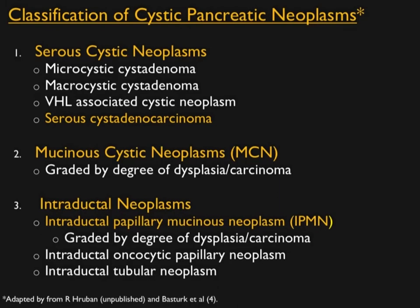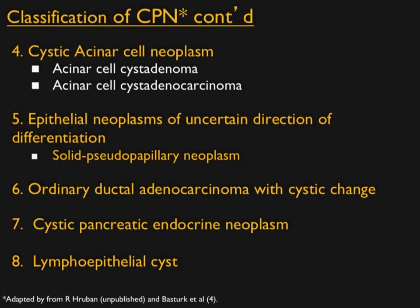Looking at the classification of cystic pancreatic neoplasms: under serous cystic, serous cyst adenomas are the ones we think about most. We'll talk about mucinous cystic neoplasms, IPMNs — probably the most common thing we will be seeing — and unusual tumors like cystic acinar cell neoplasms or SPEN tumors, which can be cystic and solid. Sometimes pancreatic adenocarcinoma can be cystic, and we'll cover cystic neuroendocrine tumors and lymphoepithelial cysts. That's a classification Ralph Rubin uses, and we'll use that as well.